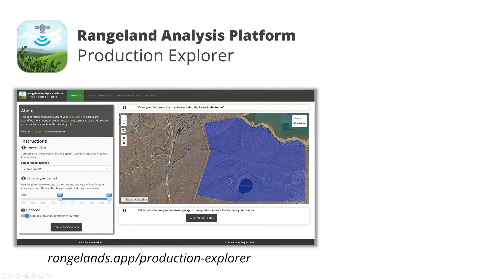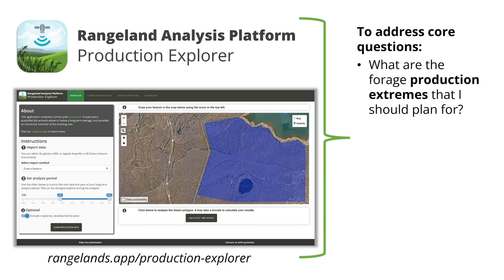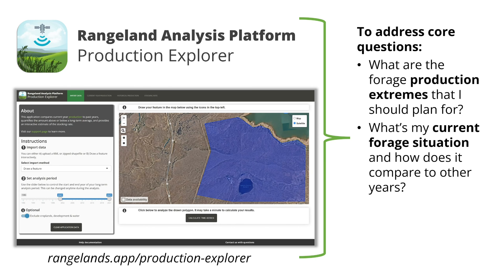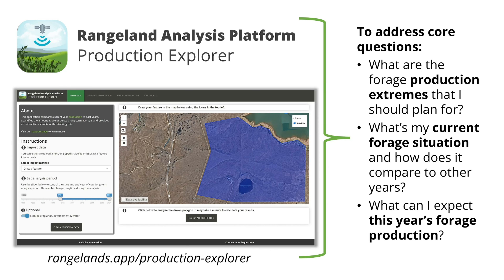Today I'm presenting on a new tool we've just released called the Production Explorer. This tool can be used to address a few key questions identified for this session — in particular, you can look at production extremes and understand year-to-year variability, assess the current forage situation compared to previous years and long-term averages, and bound your expectations for how much production you might have for this year.